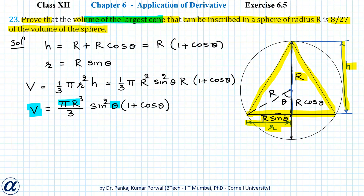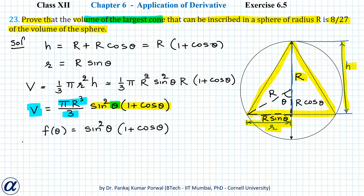I don't want to write πr³/3 all the time, so I will separate out sin²θ·(1 + cosθ) and call it f(θ) = sin²θ·(1 + cosθ). I want to maximize this with respect to theta. To maximize f(θ), I need to put df/dθ = 0.